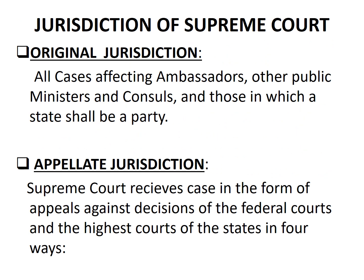We will now discuss the jurisdiction of the Supreme Court — the areas in which the Supreme Court can act. There are two categories: the first is original jurisdiction and the second is appellate jurisdiction. Original jurisdiction means all those cases in which one can directly approach the Supreme Court, including cases involving an ambassador or foreign agent, conflicts between two states of the US Federation, or conflicts between the federal government and a state. In appellate jurisdiction, the Supreme Court receives appeals against decisions of the federal courts, and even the highest courts of the states can approach the Supreme Court through appeal.